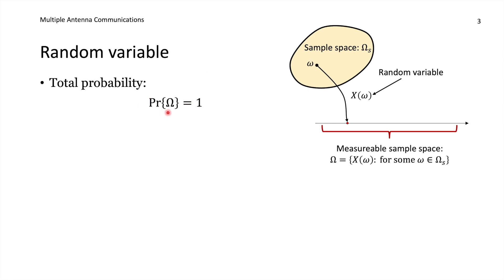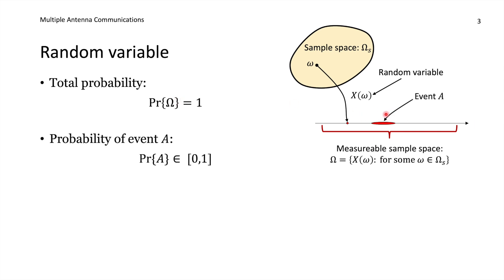The total probability of getting some realization within the measurable sample space is one, so we write the probability of uppercase omega equal to one. If we are interested in the probability of a certain event A — meaning our realization falls in a particular subset of the measurable sample space — then the probability of A is something between zero and one. That tells us the fraction of independent realizations that will end up inside the set representing event A. We can define different events and assign different probabilities to each.